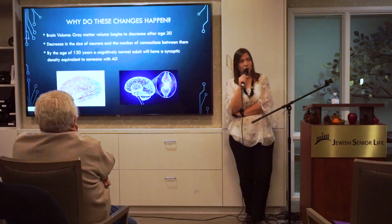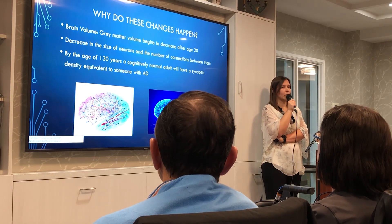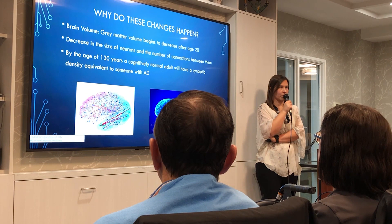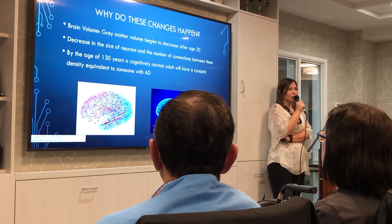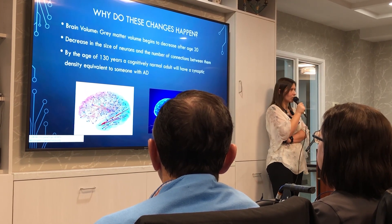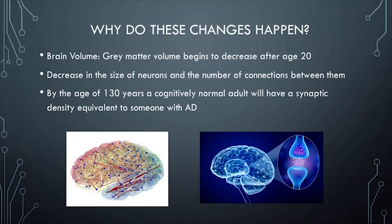As we age, the number of connections between brain cells goes down. But we're going to talk about things that can reactivate those connections and help the brain find new ways to do things. Another interesting fact: if we all reach the age of 130, we will actually have so few connections between brain cells that it would be comparable to someone with Alzheimer's disease.